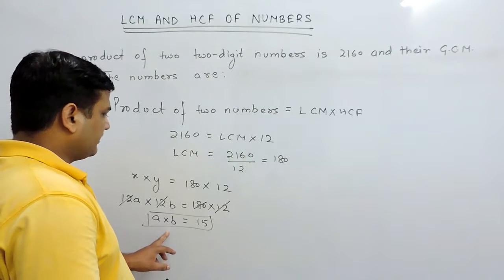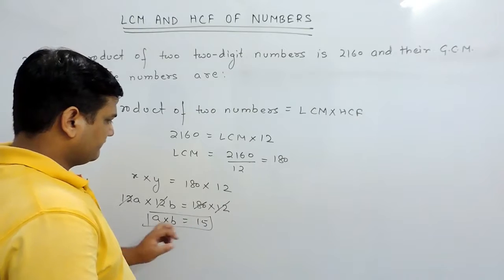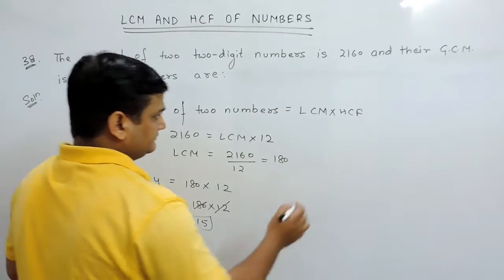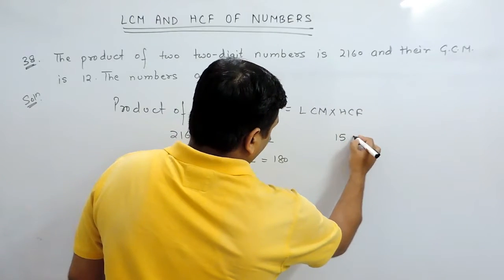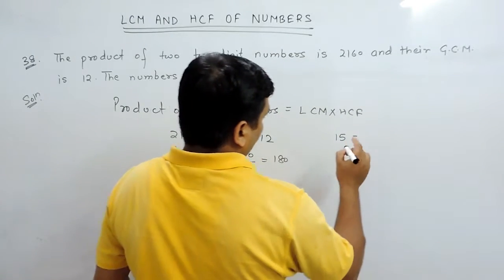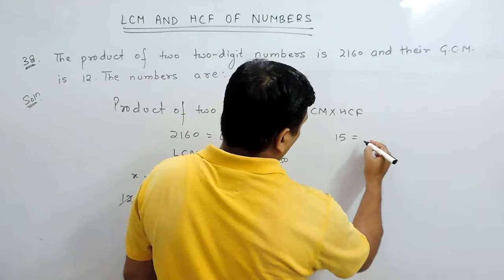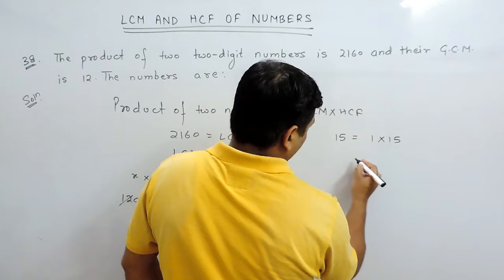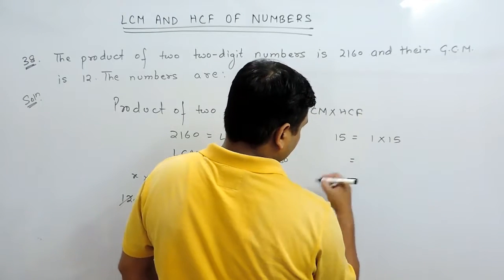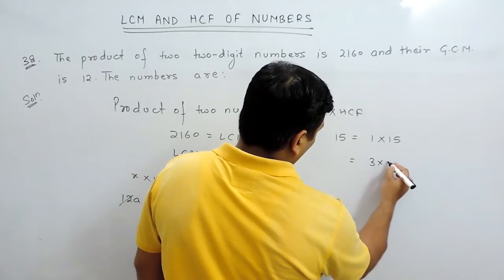Now we will find the co-prime pairs of A and B, and when 15 is split into co-prime factors, then it is 1 into 15 or next is 3 into 5.